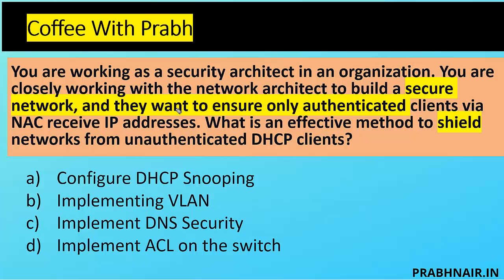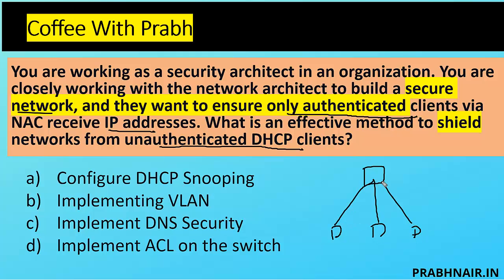It's a very tricky question. You are working as a security architect in an organization, closely working with the network architect to build a secure network. They want to ensure only authenticated clients via NAC receive an IP address. NAC ensures only authorized devices are part of the network. So what is the effective method to shield the network from unauthenticated DHCP clients? We have a DHCP server, and anyone requesting via DORA gets an IP — we need to restrict that to authorized clients only.